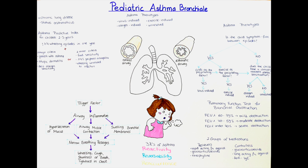In preschool children, so age 3 to 5, virus-induced asthma is the most common, followed by allergen-induced asthma, and then the least common is exercise-induced asthma. In school children, so age 6 to 12, allergen-induced asthma is the most common, followed by virus-induced asthma, and the least common is also in this group exercise-induced asthma.